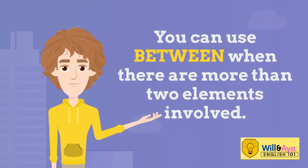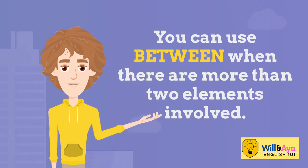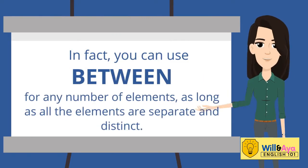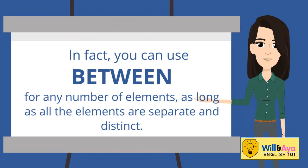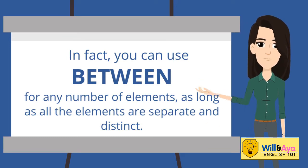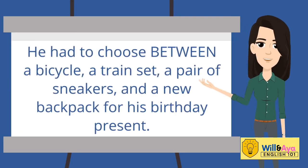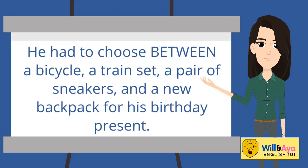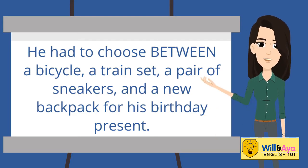You can use 'between' when there are more than two elements involved. In fact, you can use 'between' for any number of elements, as long as all the elements are separate and distinct. For example: he had to choose between a bicycle, a train set, a pair of sneakers, and a new backpack for his birthday present.